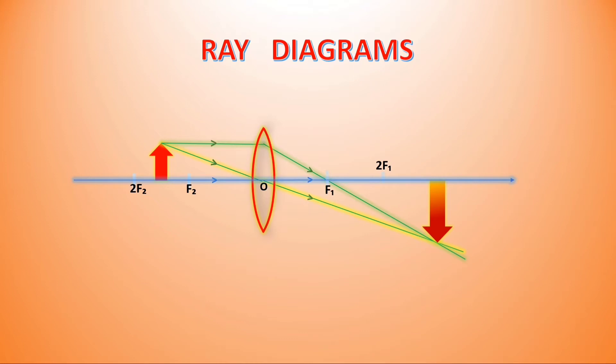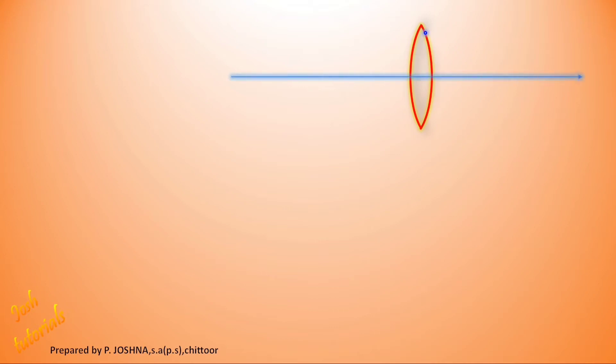I am going to show you how to draw it. I have placed a lens, and onto it I am drawing the principal axis. O is the optic center, F1 and F2 are the focal points of the lens, and 2F1 and 2F2 are the centers of curvature.